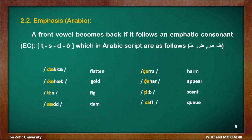The Arabic examples include: daka — 'flatten,' dr — 'to harm,' dhahub — 'gold,' dr-har — 'appear,' and teem — 'fig.' These illustrate how front vowels shift to back vowels when adjacent to emphatic consonants.